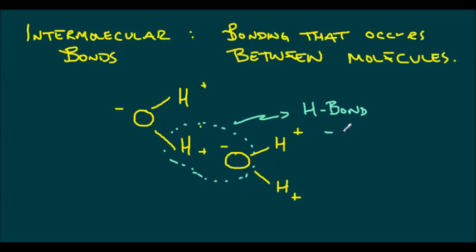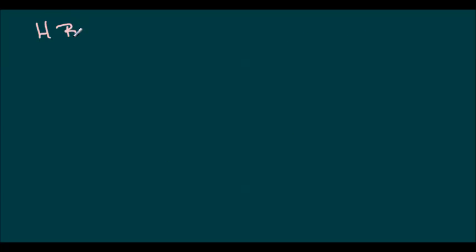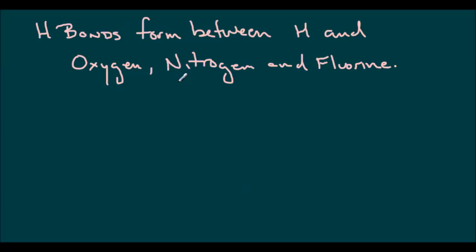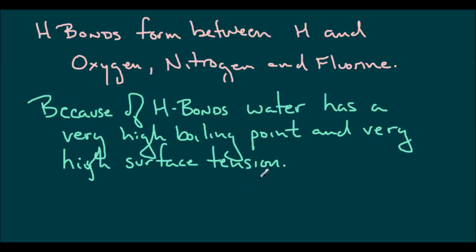These are fairly weak bonds, and they only have about 5% of the strength of a covalent bond. H-bonds will form between hydrogen and oxygen, nitrogen, and fluorine. And this has a very major impact on the solubility of other substances. Because of H-bonds, water has an extremely high boiling point, and it holds itself together. It also means that water has a very high surface tension. And this is because water molecules like to stick together, and they like to cling to each other because of these H-bonds.